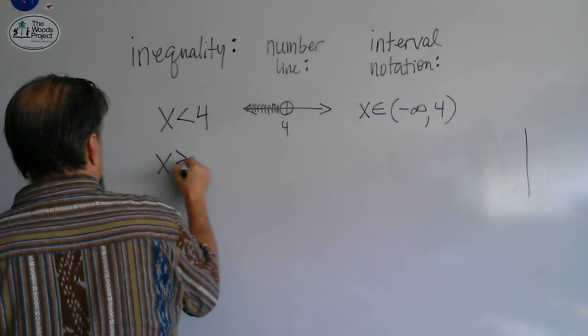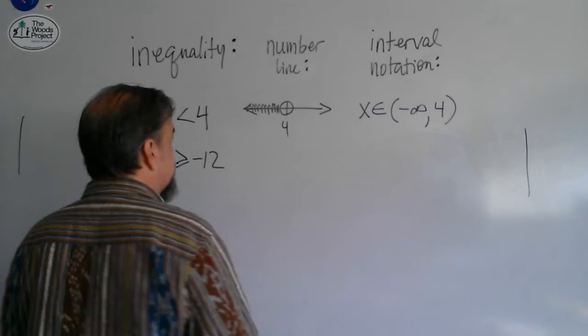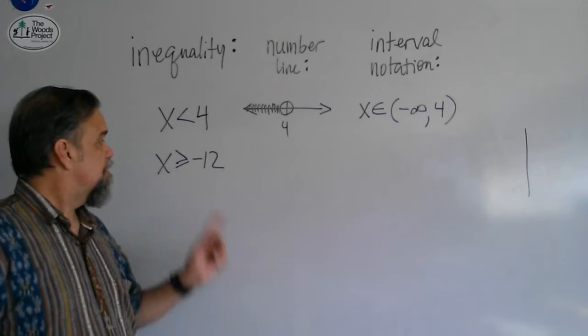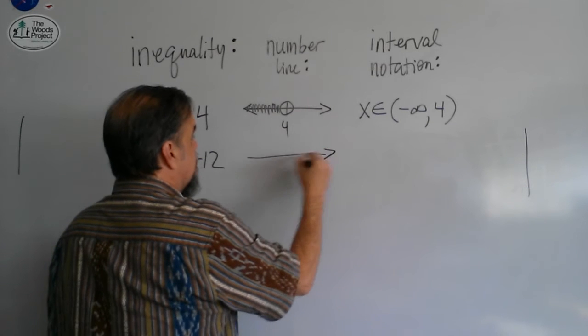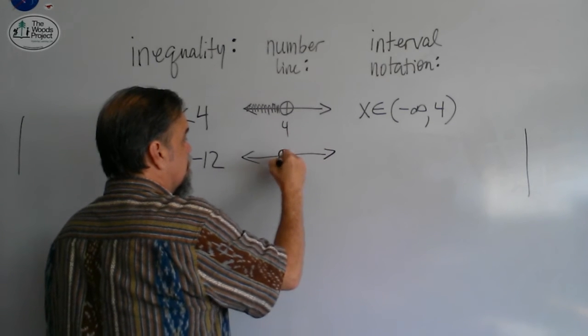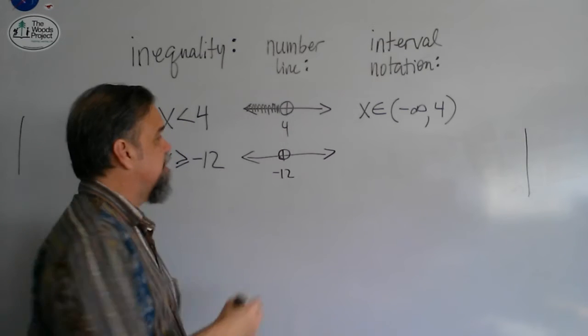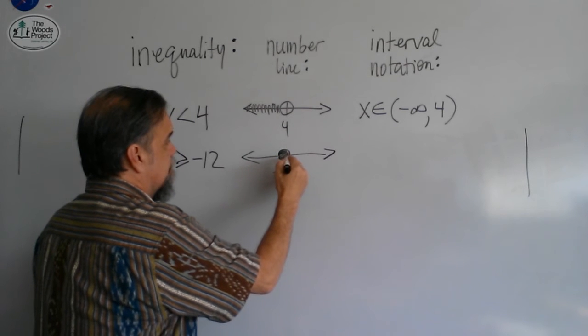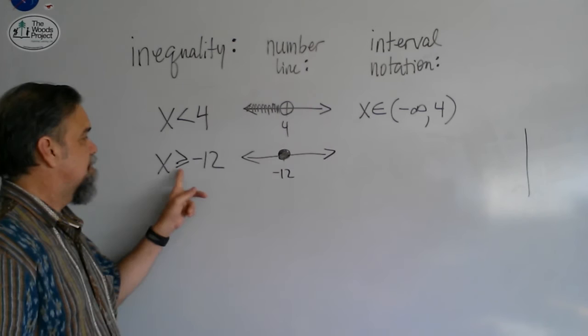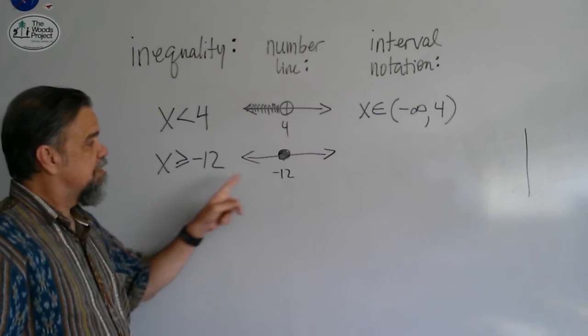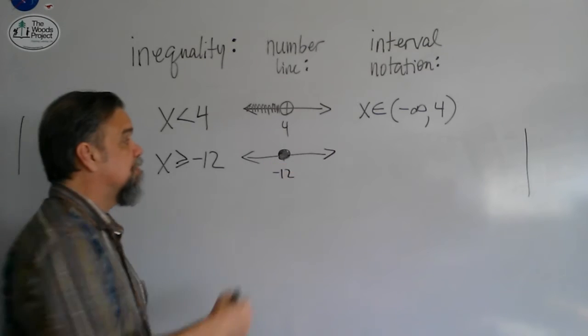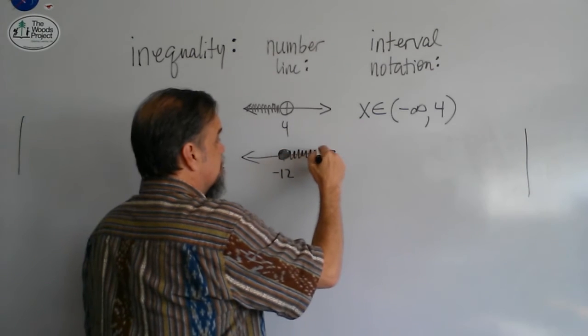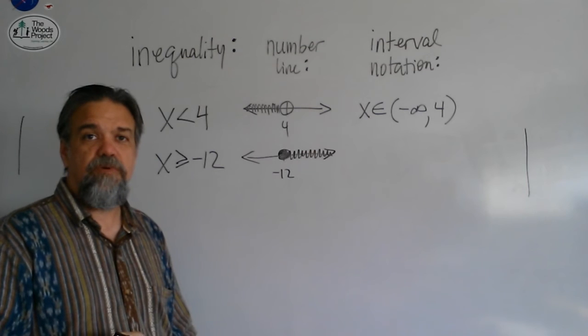Let's take x is greater than or equal to negative 12. Greater than or equal to negative 12. Again, we have our number line. I'll put a negative 12 here. This time, I'm going to fill it in, because of that or equal to there. So I'm going to fill in the negative 12, and it's greater than, big numbers go on the right, so I'm going to shade over on this side, and that's my number line.